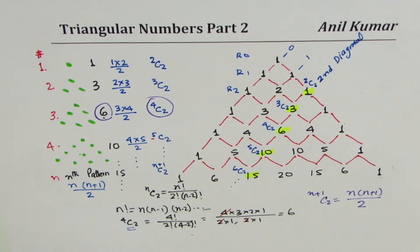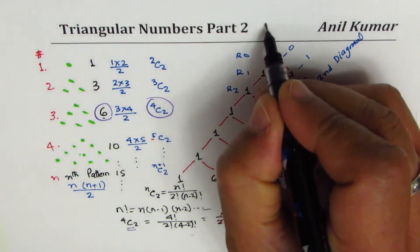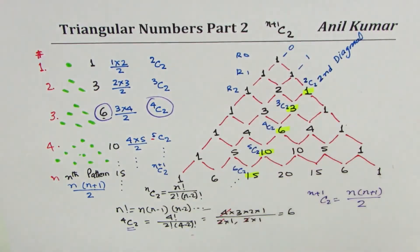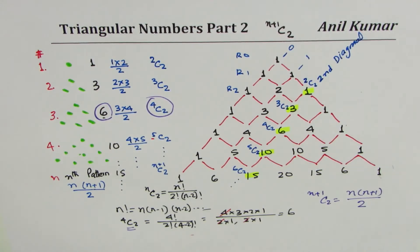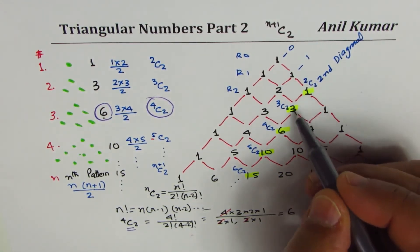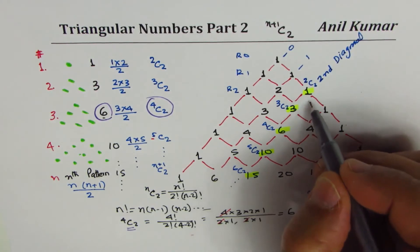We are going to explore more patterns. We have already found a general term for a triangular number, and the general term is n+1C2, which becomes n times n plus 1 divided by 2, where n is the term number. Now, there are so many interesting things to look into, and that is, when we add these numbers, what do we get? If I add 1 and 3, 1 plus 3 is 4, do you see that?